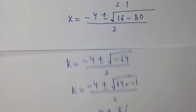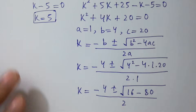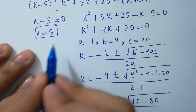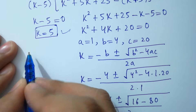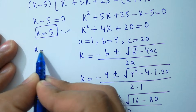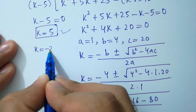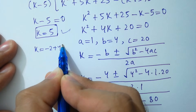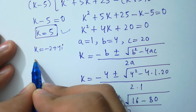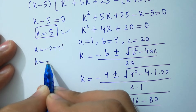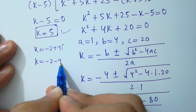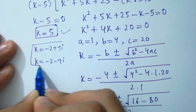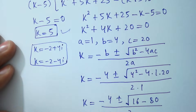So we have one real solution: k equals 5, and two complex solutions: k equals minus 2 plus 4i, and k equals minus 2 minus 4i.